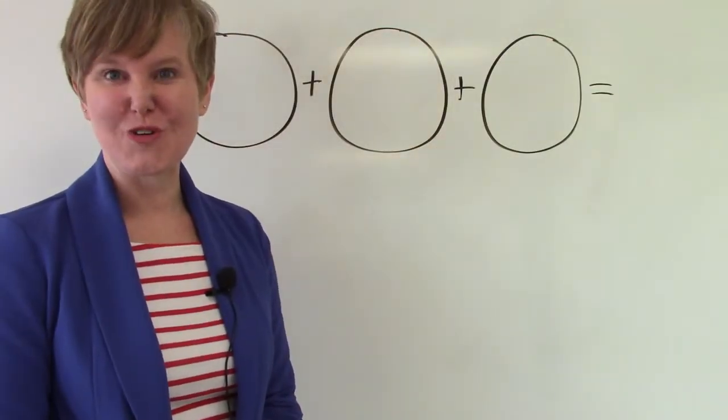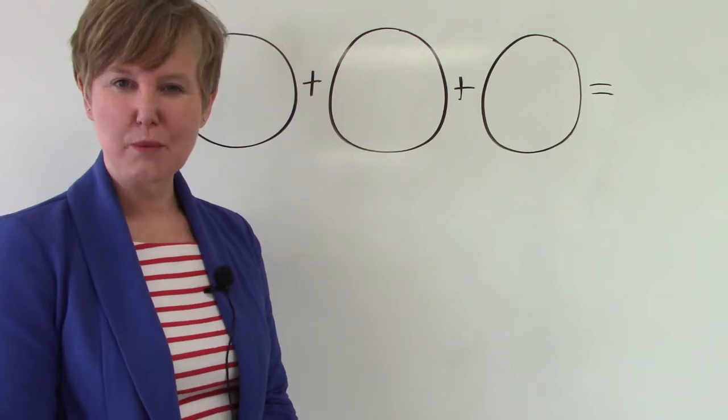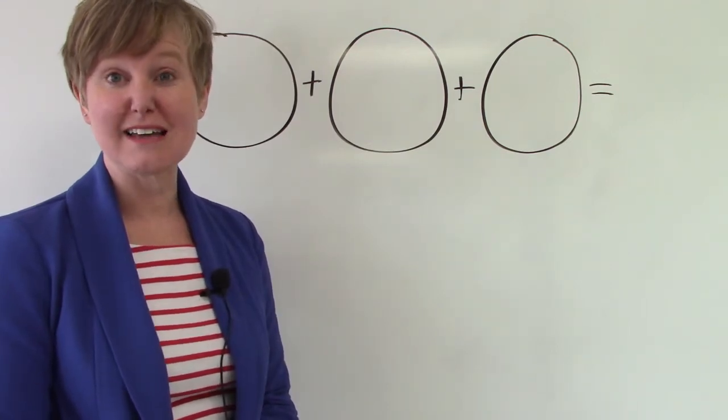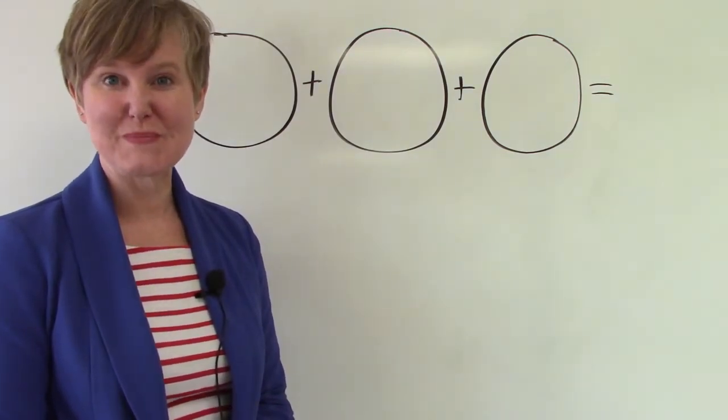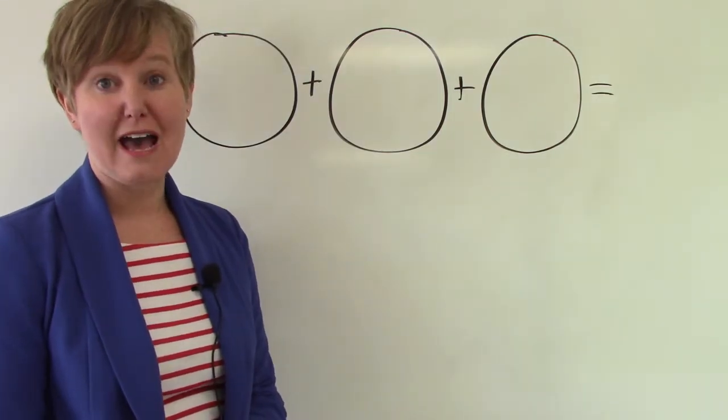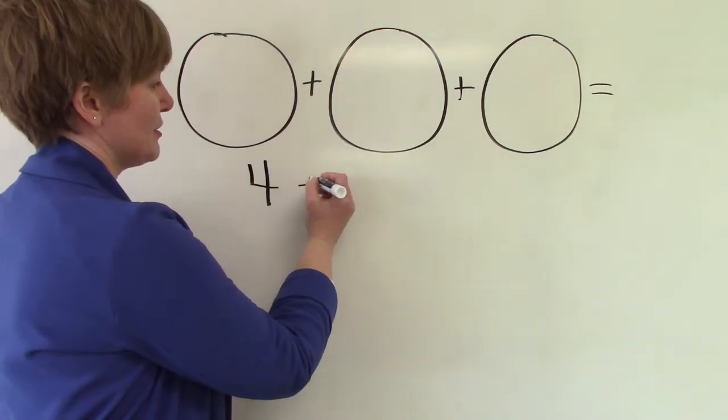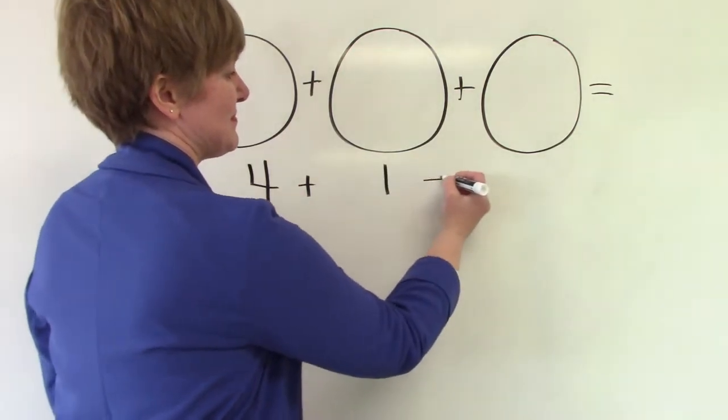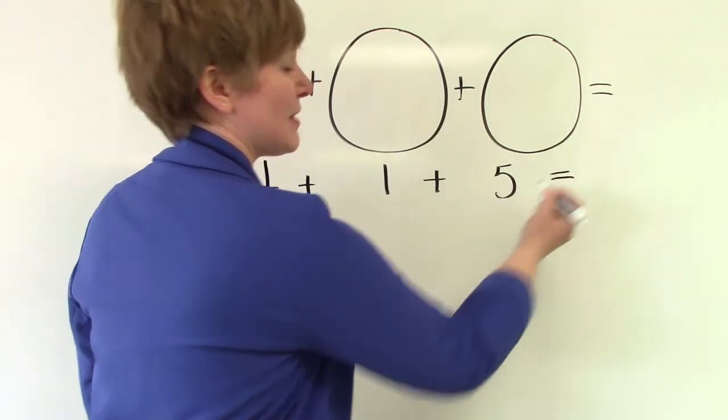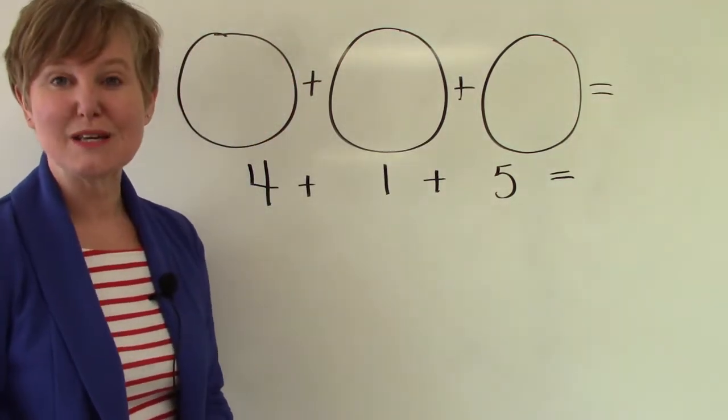Class, I have three circles on the board and we're going to use those to help us add some numbers together today. The numbers that we are going to add are 4 plus 1 plus 5 and we're going to see what those equal.